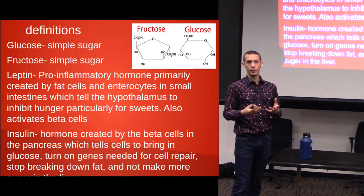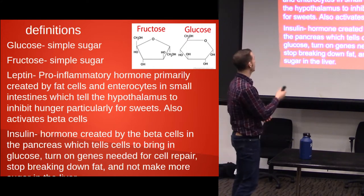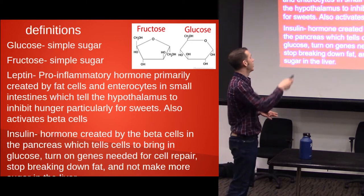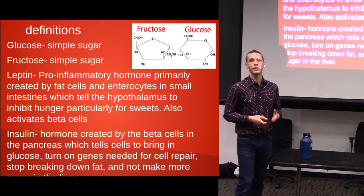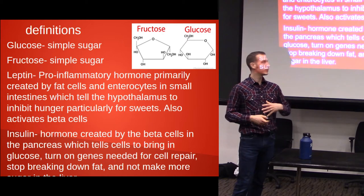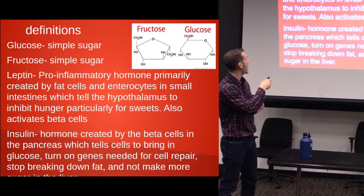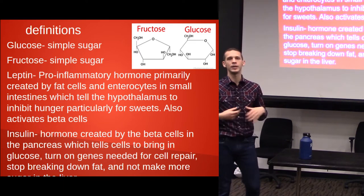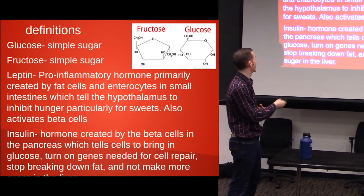Now we're going to get into some definitions we need before we talk about the disease process. You need to know what glucose and fructose are. Glucose is a simple sugar. Fructose is another simple sugar, but fructose acts a lot differently inside of the body — we'll talk about that on a later slide. Leptin is a hormone primarily created by fat cells. Fat cells create leptin, and enterocytes create it too. It tells the hypothalamus — which is in your brain — to inhibit hunger, and it also activates beta cells in the pancreas, which are responsible for insulin production.